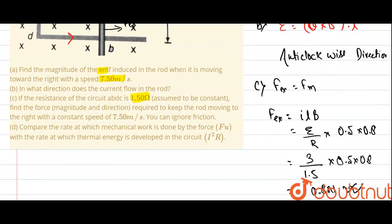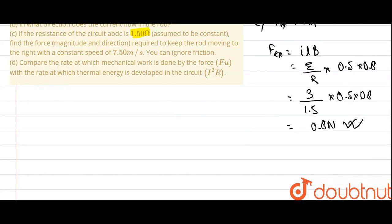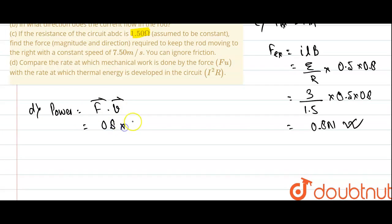Now part D: compare the rate at which mechanical work is done with the rate at which thermal energy is developed. To find power, we use P = F·V. We already calculated F as 0.8 Newton and the velocity is 7.5 meters per second. Calculating this gives 6 watts as the answer for part D.